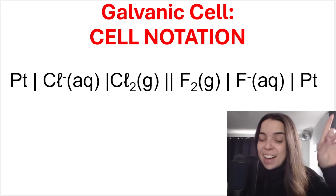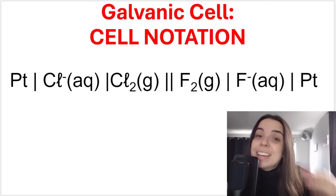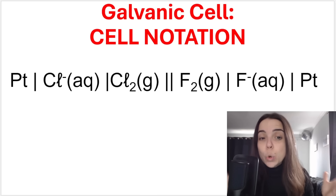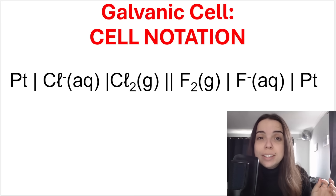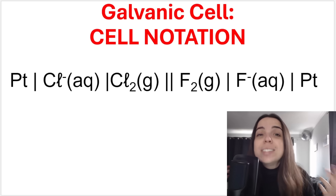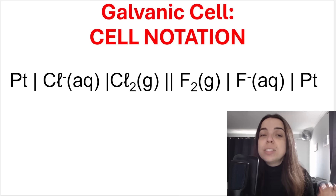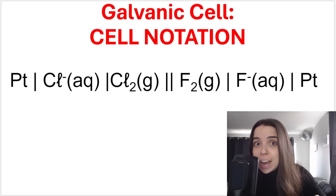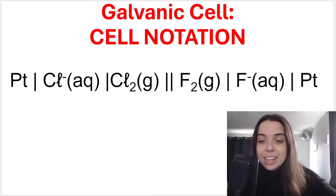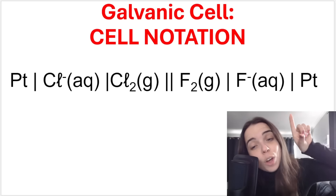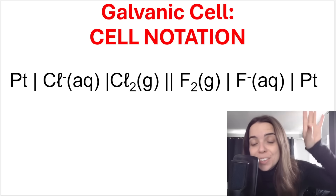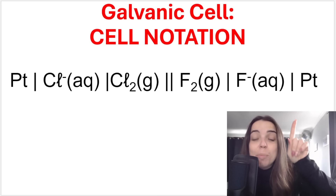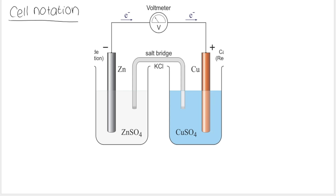Cell notation for the galvanic cell. The cell notation is basically a shorthand representation or a summary of the cell's components and reactions. This is an example of what a cell notation can look like, and we'll go through this example in a moment.